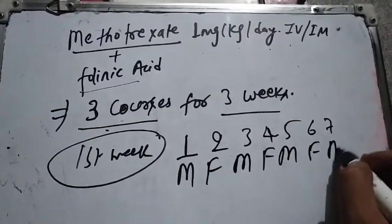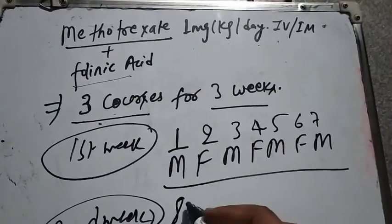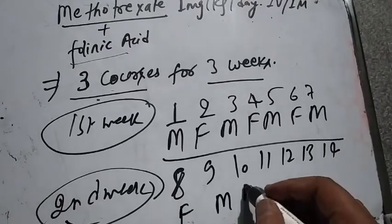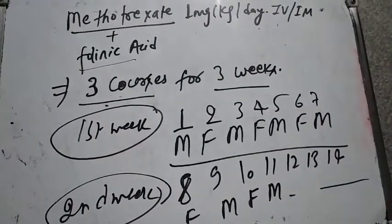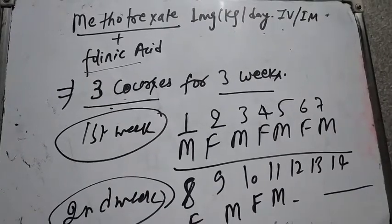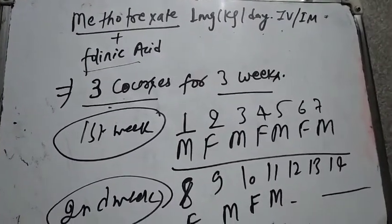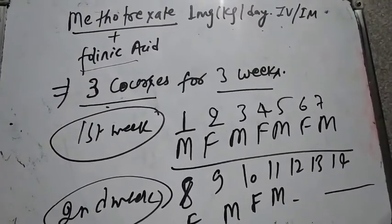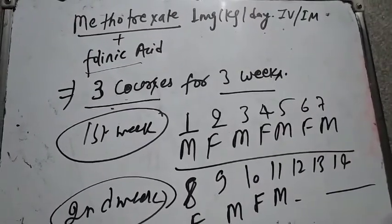Each course is one week — 7 days. In the first week, methotrexate is given on days 1, 3, 5, and 7. Then in the second week (days 8 through 14) and the third week, the subsequent courses follow the same schedule. These were all the key points about the management of molar pregnancy. Thank you for watching my channel; if you liked it, please subscribe.